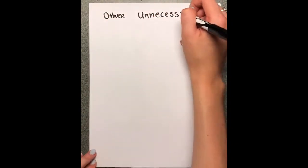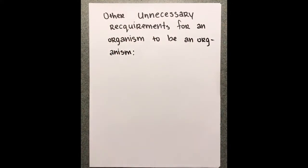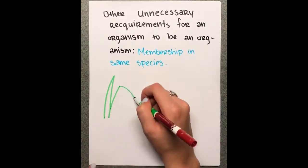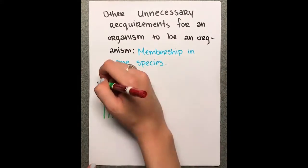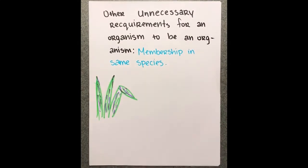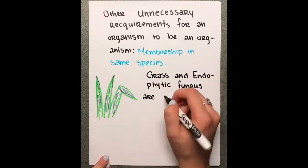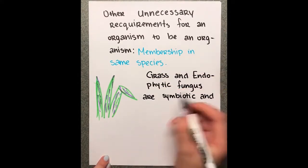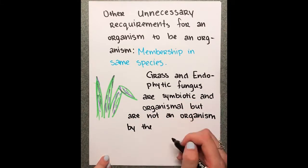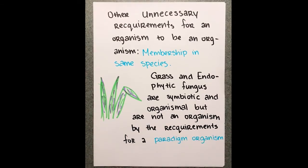Other requirements that have since been proven unnecessary is for the thing that we consider an organism to be members of the same species. For example, grass and endophytic fungus are not the same species, despite being very organismal. The fungus feeds off of the energy the grass produces, and in turn provides it with numerous benefits, like resistance to herbivory and heat stress, as well as suppression of fungal pathogens.